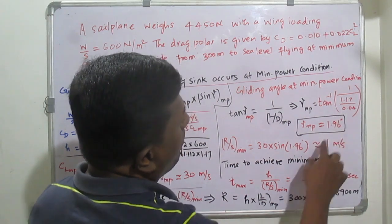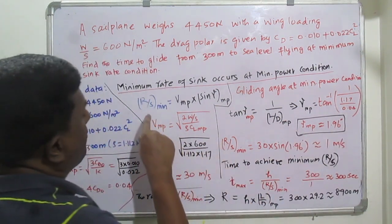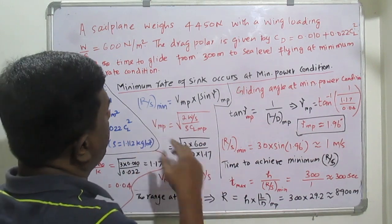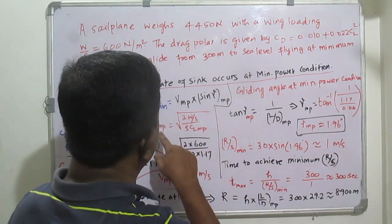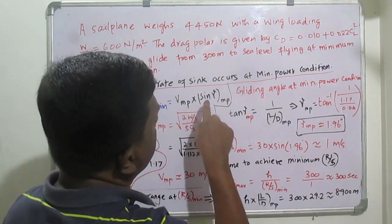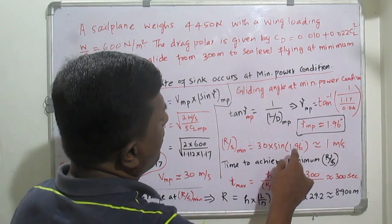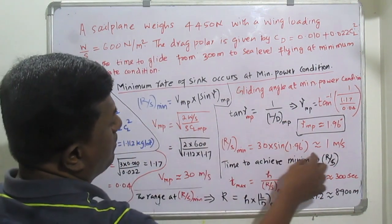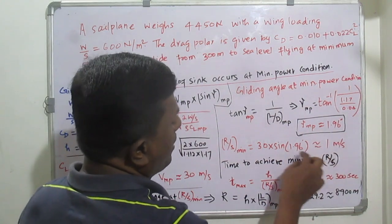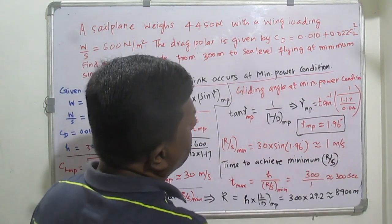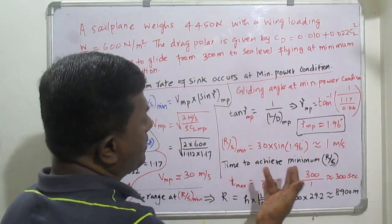Now we can calculate the minimum rate of sink. Rate of sink_min = V_min_power × sin(γ_min_power) = 30 × sin(1.96°). After calculation, this value comes out to approximately 1 meter per second.